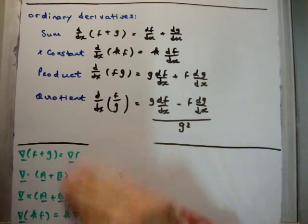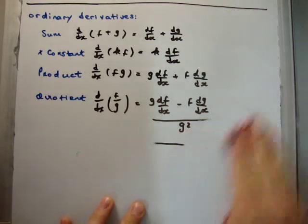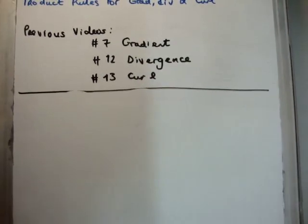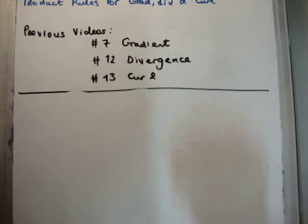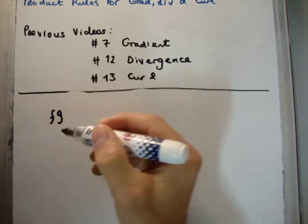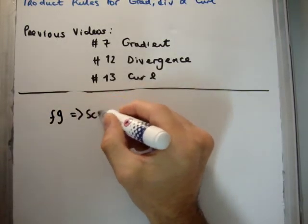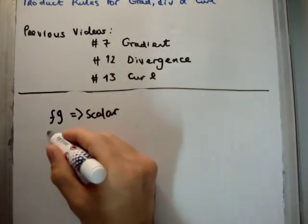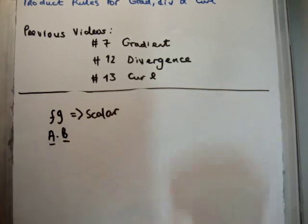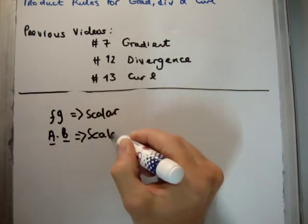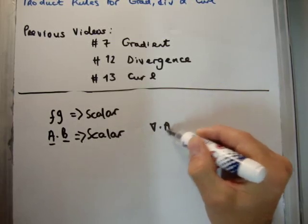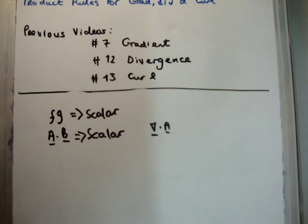Unfortunately, the product and quotient rules for grad, div and curl are nowhere near as straightforward. The reason is that there are two ways you can construct a scalar as the product of two functions. You can construct a scalar by multiplying two scalar functions, or by taking the dot product between two vectors — that will also give you a scalar. Since the divergence of a vector gives a scalar, there are two ways of making a scalar, making the product and quotient rules more difficult.